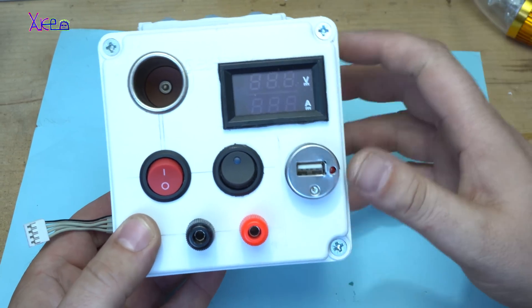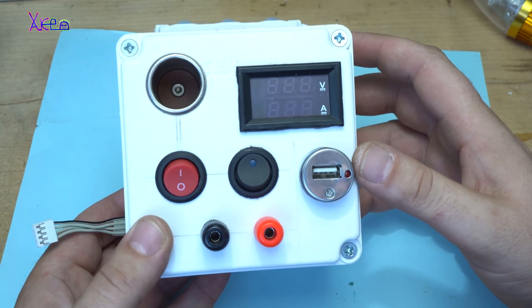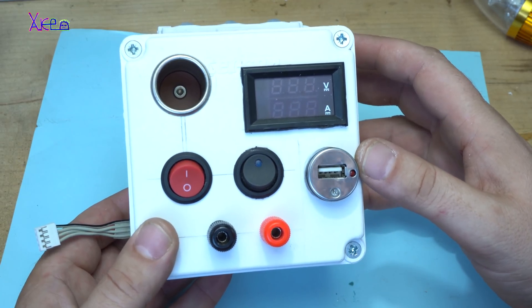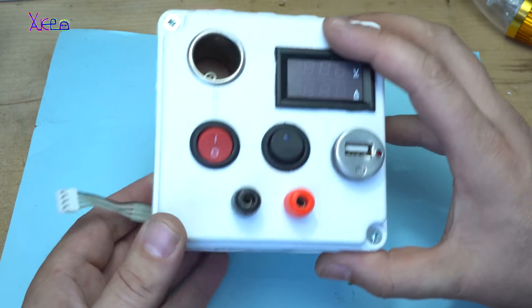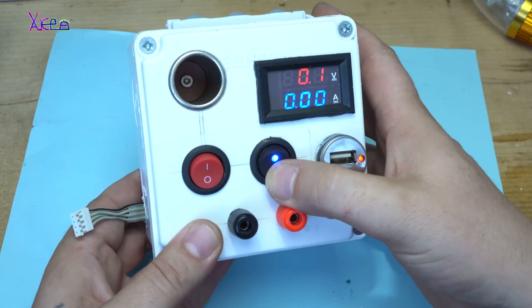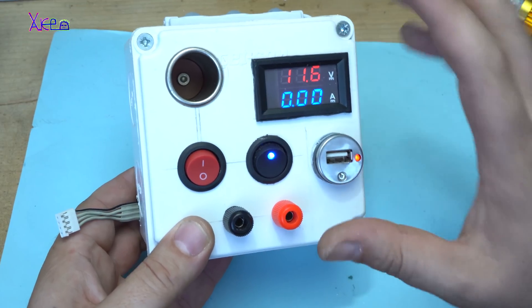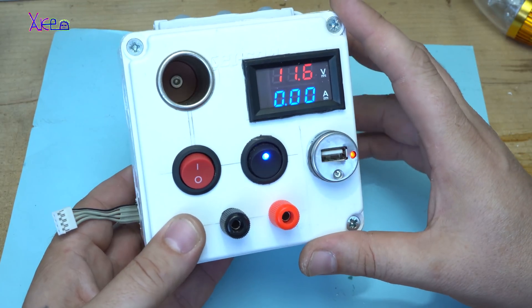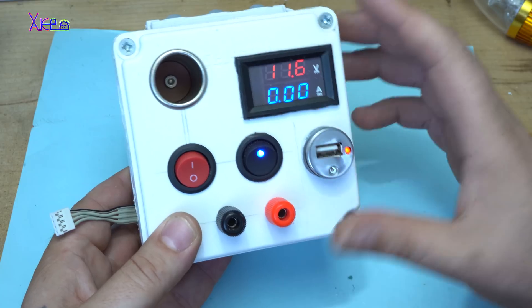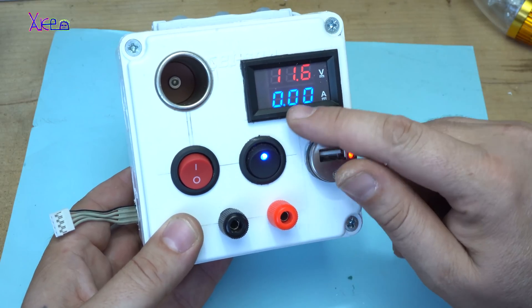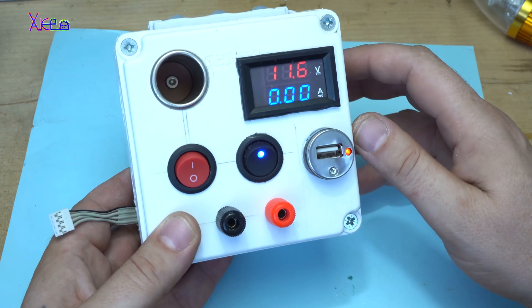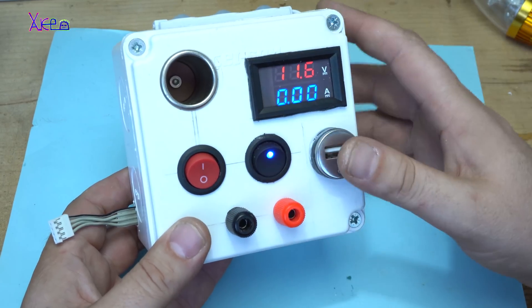Now I'm going to test the DIY power box and see if it all works. Whoa, it's working! 11.6 volts on the battery pack, 0.00 amps because nothing is plugged in.